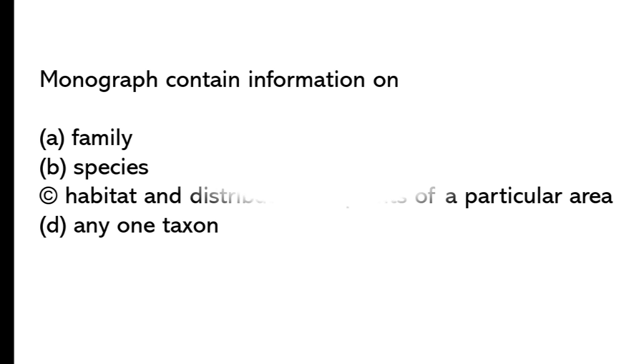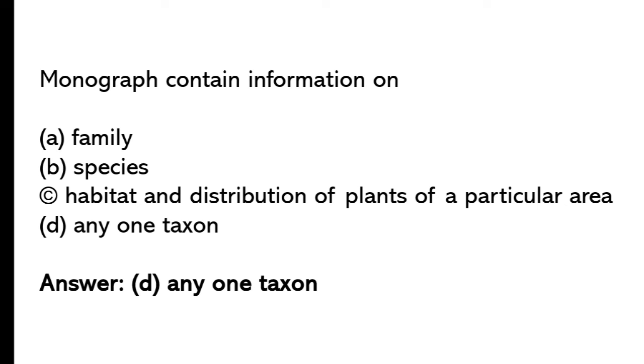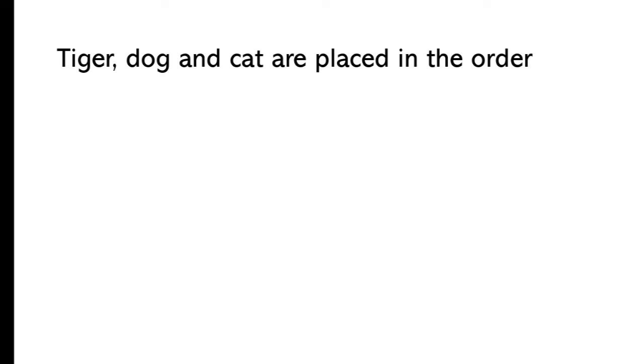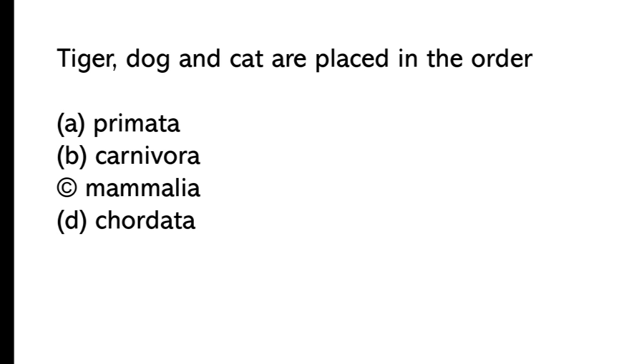Monograph contains information on: Family species, habitat and distribution of plants of a particular area, Any one taxon. So the correct answer is option D, Any one taxon. Tiger, dog and cat are classified in the order: So the correct answer is option B, Carnivora.